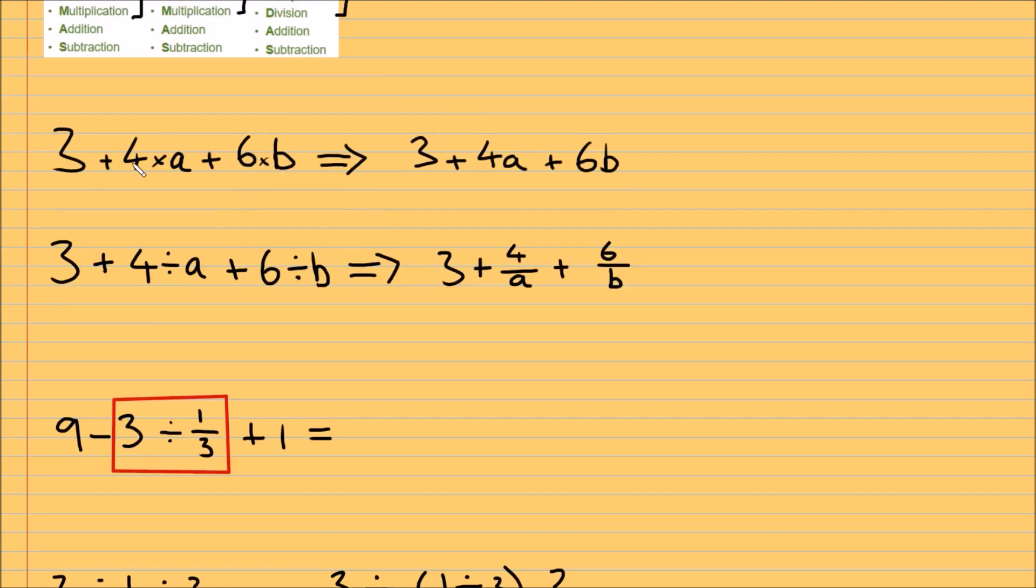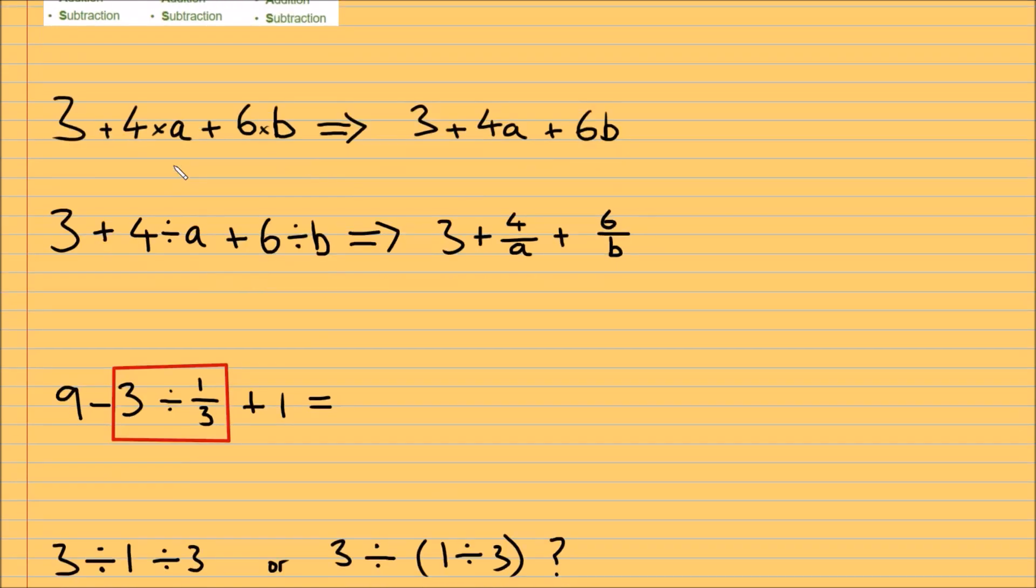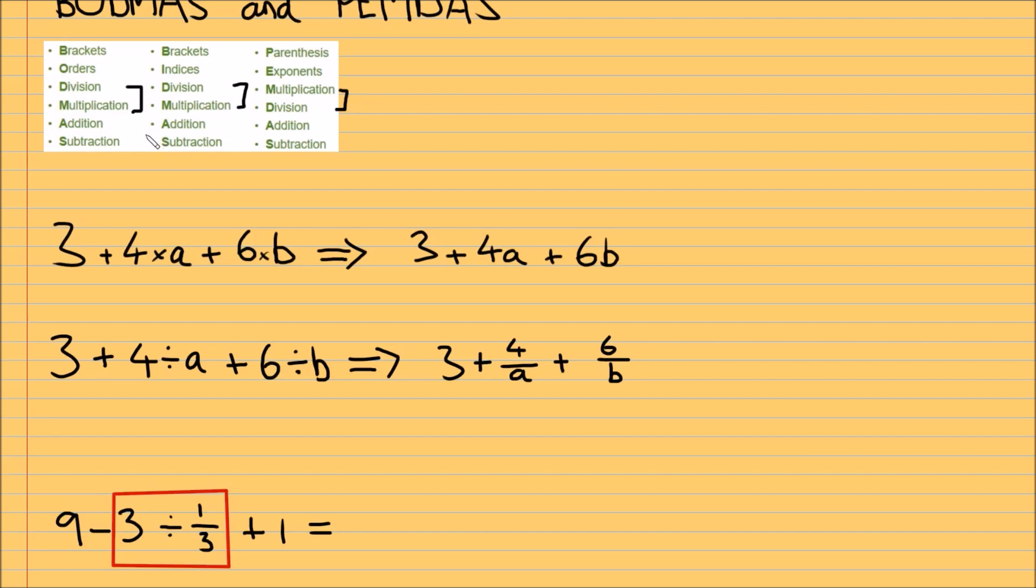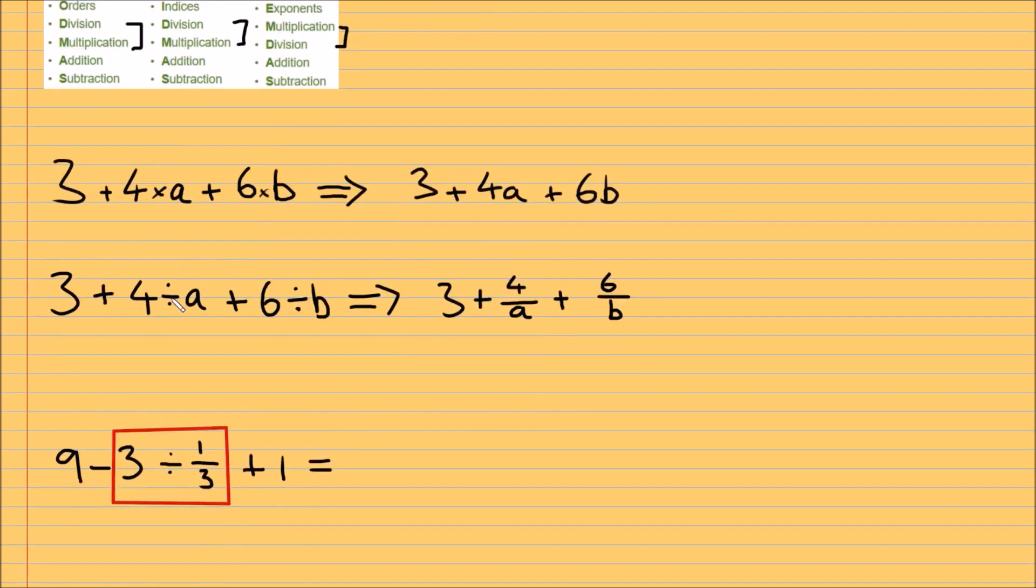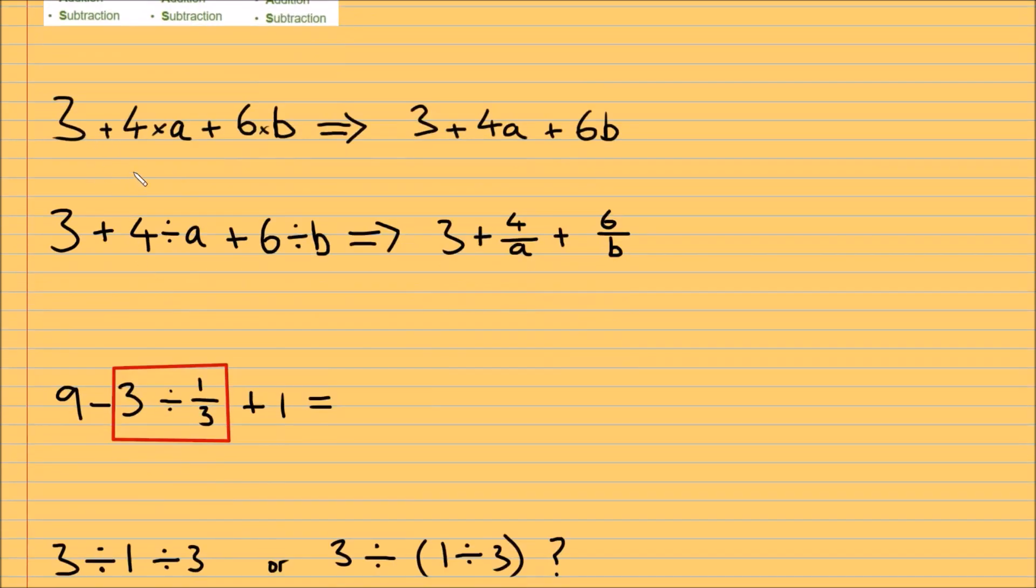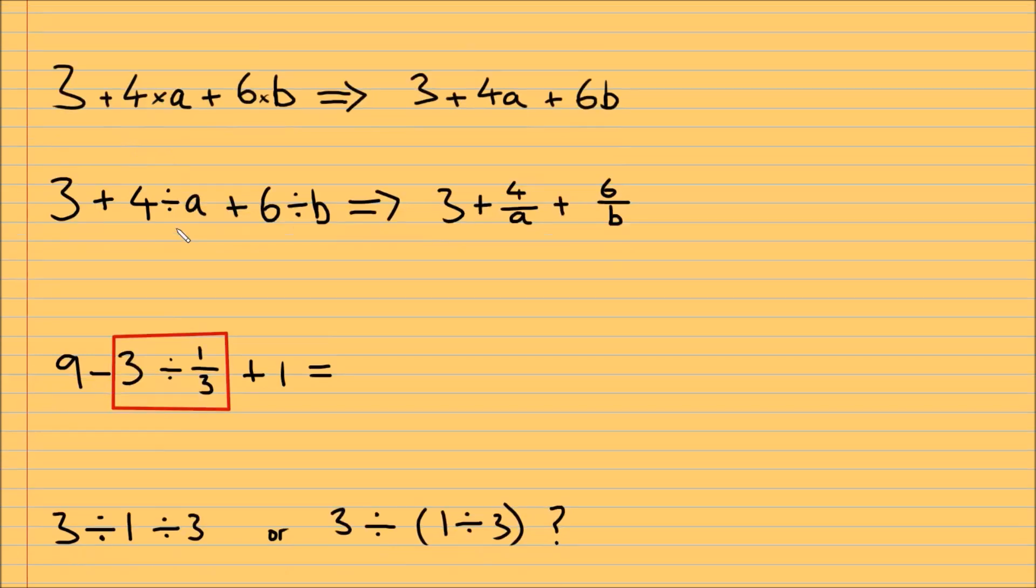So if you look at these terms here, if I say 3 plus 4 times a plus 6 times b, we know and we see this as 3 plus 4a plus 6b. We always do the multiplication first. And because of the same precedence, regardless if you're using BODMAS or PEMDAS, you would do the same for divisions. So if we replace these multiplication signs with division signs, we get 3 plus 4 divided by a plus 6 divided by b, but we would read this and understand this as 3 plus 4 over a plus 6 over b.